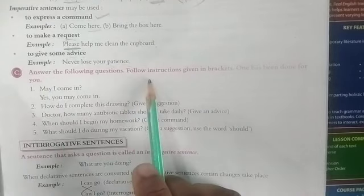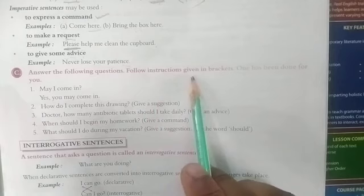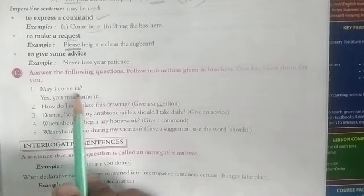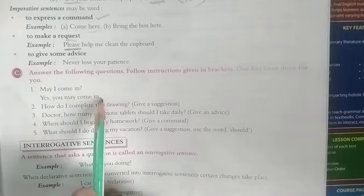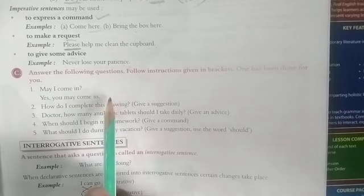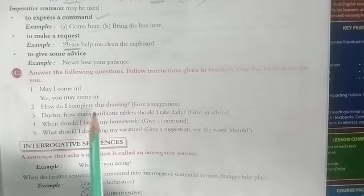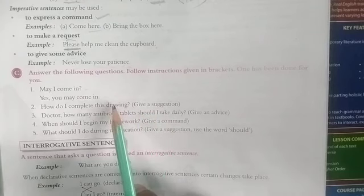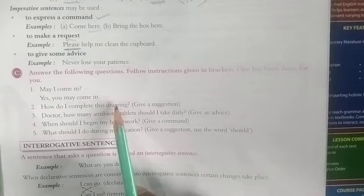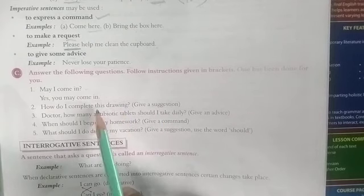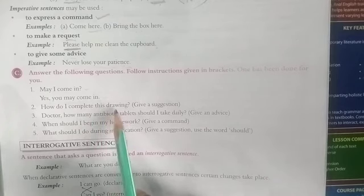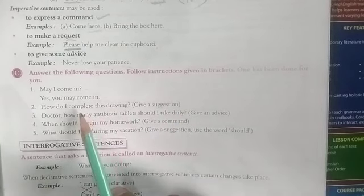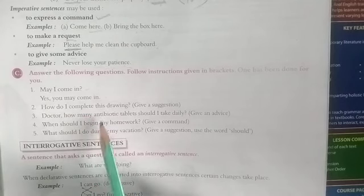Now exercise C: answer the following questions following the instruction given in the bracket. One has been done for you — 'May I come in?' / 'Yes, you may come in.' Question two: 'How do I complete this drawing?' — give a suggestion. When giving a suggestion, you say: 'You should complete the drawing by watching the completed one.'